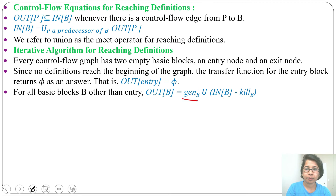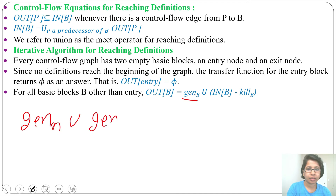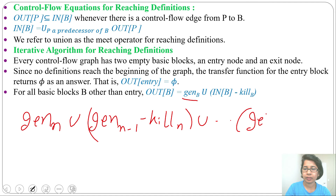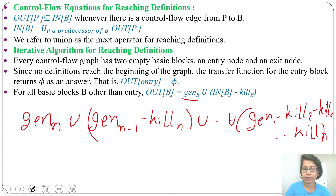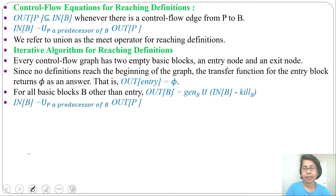Then what will be the formula for gen of B? Gen of block will be gen of N (the last statement), union gen of N-1 minus kill of N, union up to gen of 1 minus kill of 2 minus kill of 3 up to minus kill of N. I already discussed this gen and kill formula in the previous lecture, just go through that. Then what will be in of B? In of B will be the union of all out of predecessors — so whatever the predecessors of that block are, their out union will be in of B.